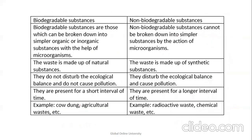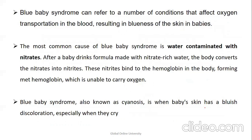Biodegradable substances can be broken down into simple organic or inorganic forms — made of natural materials — and do not disturb ecology or cause pollution; they have a short life. Non-biodegradable substances cannot be broken down; they are made of synthetic substances, lead to ecological imbalance and pollution, and have a very long life. Examples of biodegradable: cow dung, agricultural waste. Examples of non-biodegradable: radioactive waste, chemical waste.